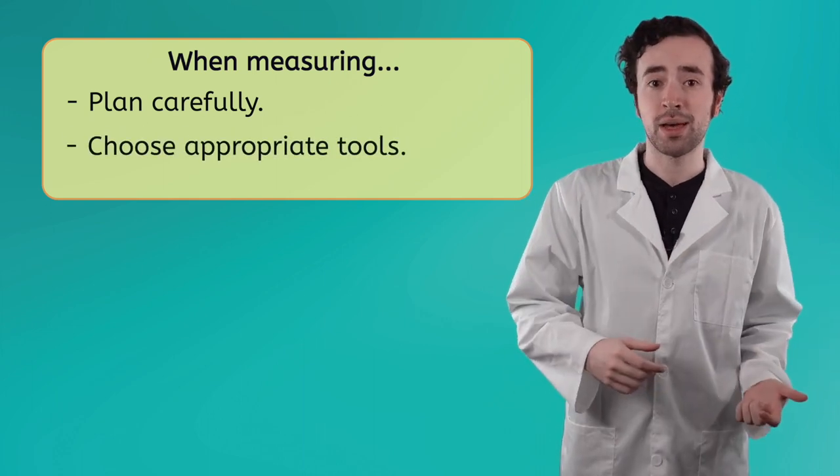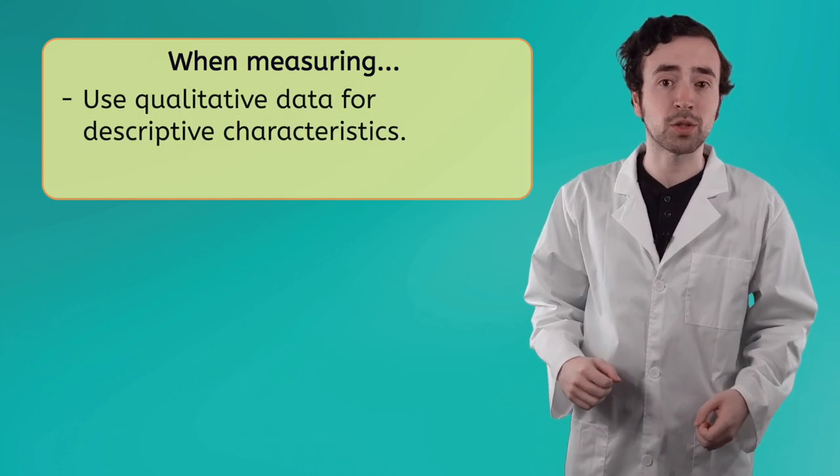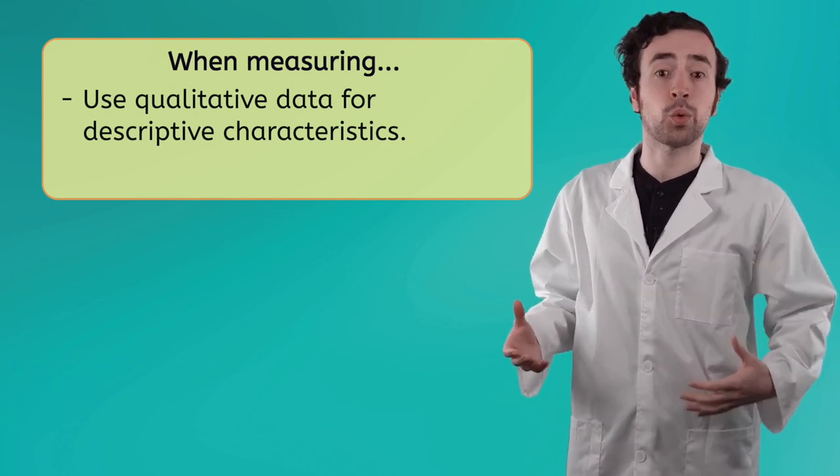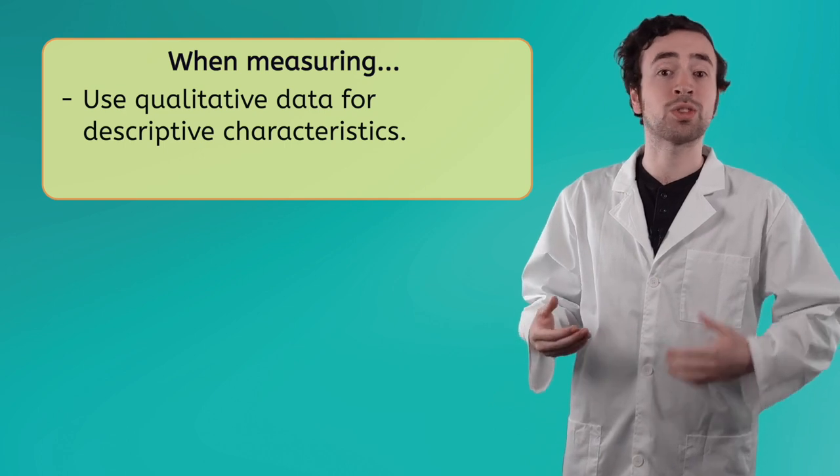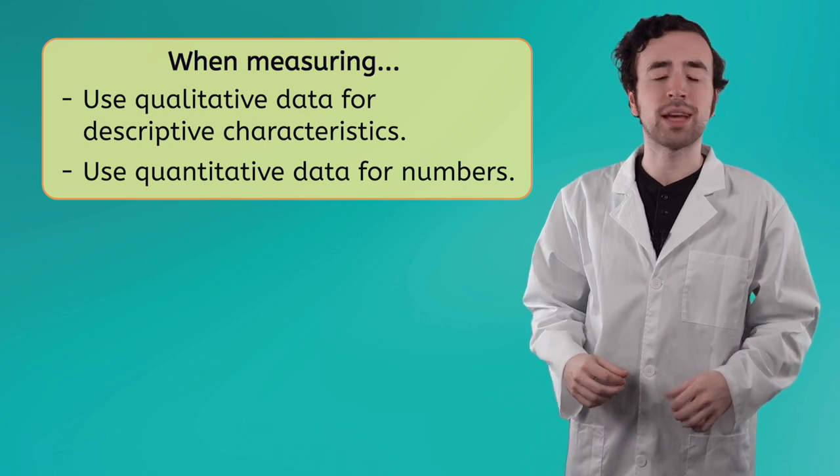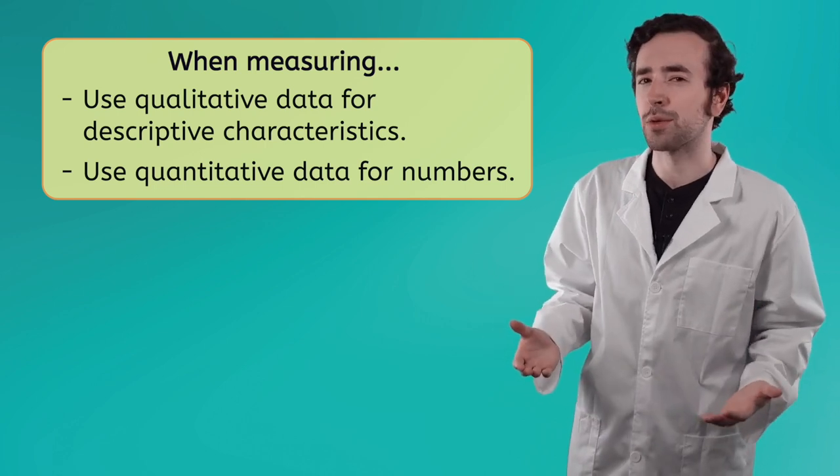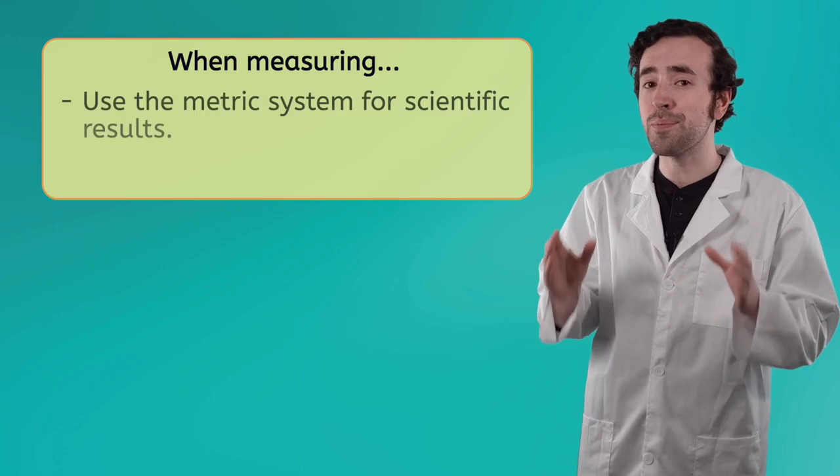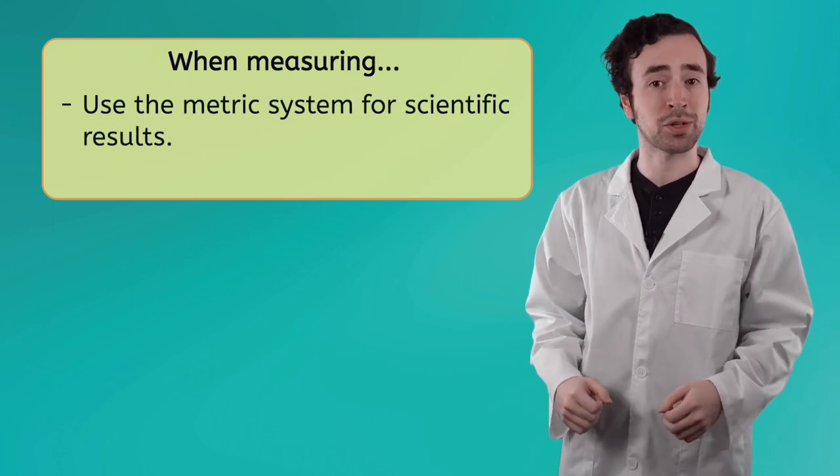Use qualitative measurements whenever you're dealing with descriptive characteristics or qualities like appearance or sound, and use quantitative measurements whenever you're dealing with numbers. And of course, if you plan on sharing your results with fellow scientists, always use the metric system to measure your results. In our next lesson we're going to learn about how biologists organize and analyze their results. Until then, I'm Justin, and remember: life is full of wonders, so keep learning and don't ever stop wondering.